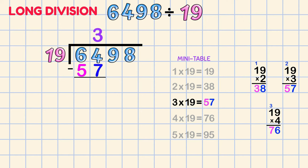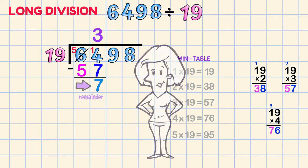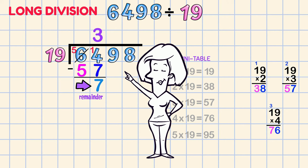4 minus 7, can't do it! Borrow a 10! 6 becomes a 5. And there's the 10 I've borrowed! Now 14 minus 7, and that's 7! These 5s just cancel out! This is the remainder! It's down here! And the next number in the problem is up here!